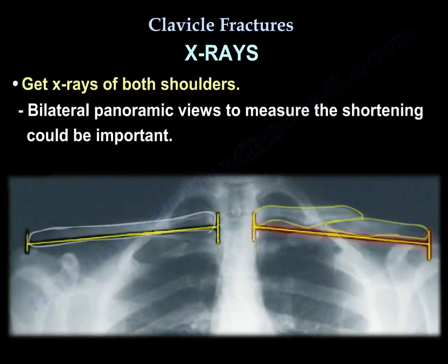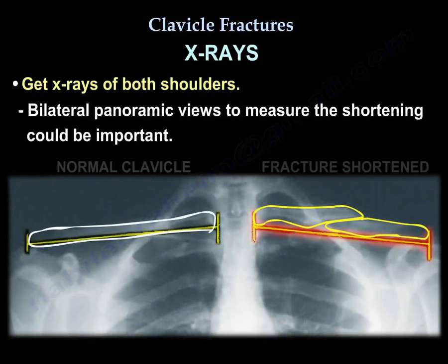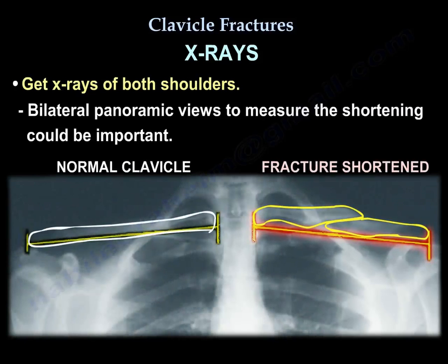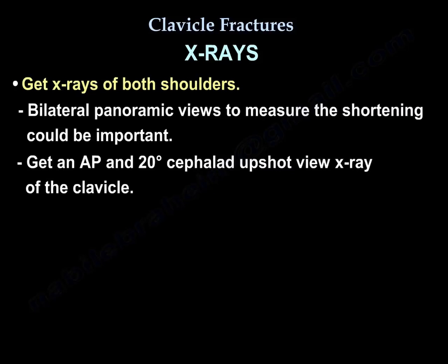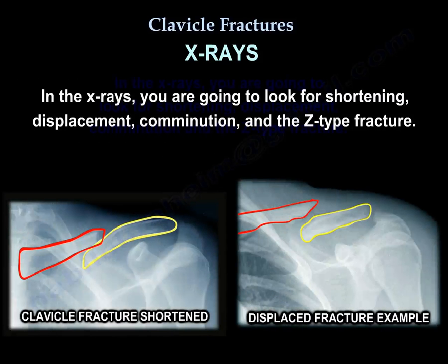Get x-rays of both shoulders. Bilateral panoramic views to measure shortening could be important. Get an AP and 20-degree cephalad upshot view x-ray of the clavicle. On the x-ray, look for shortening, displacement, comminution, and the Z-type fracture.